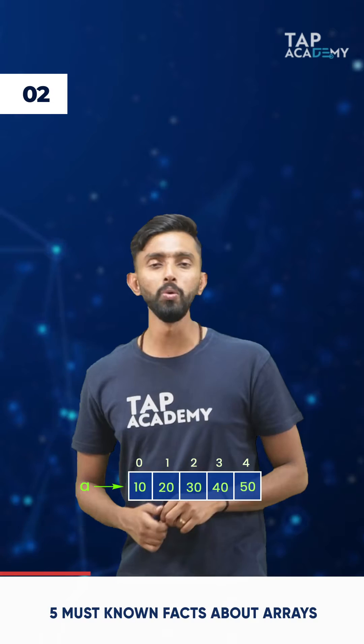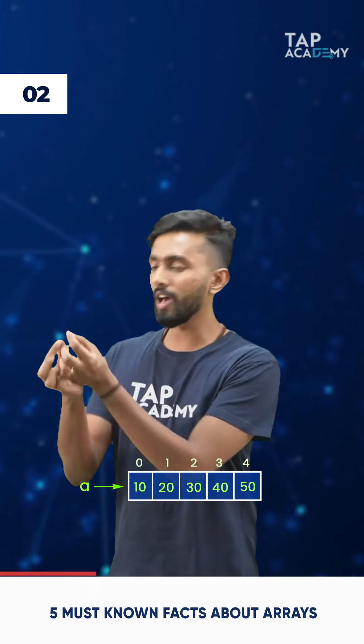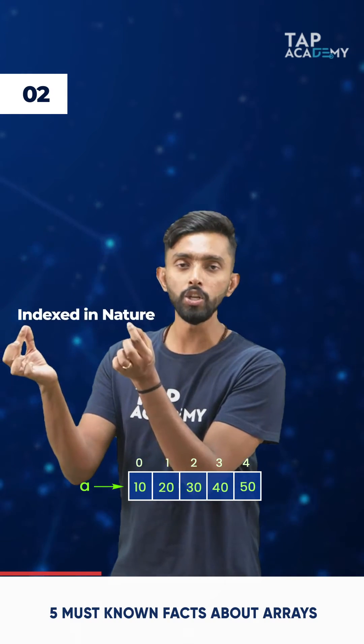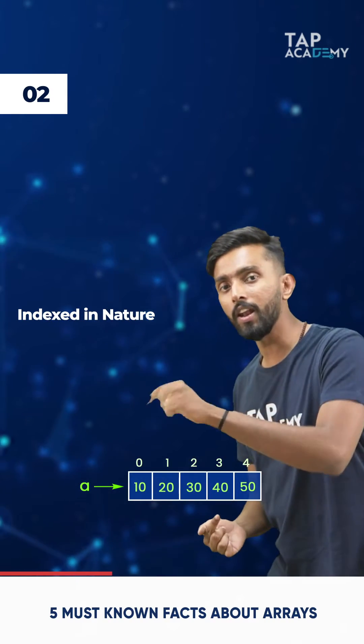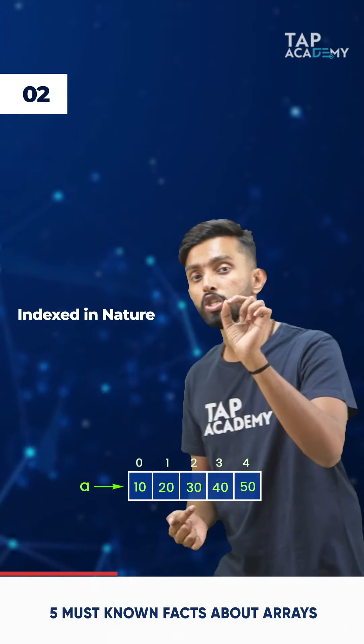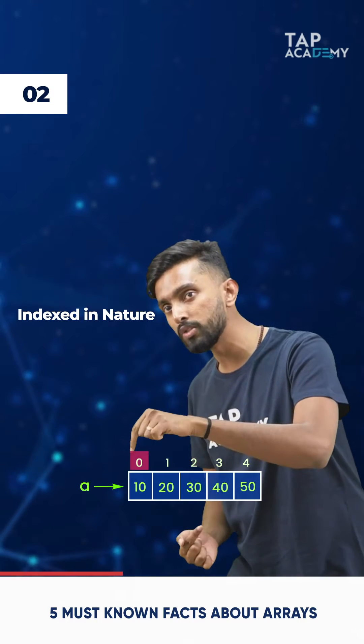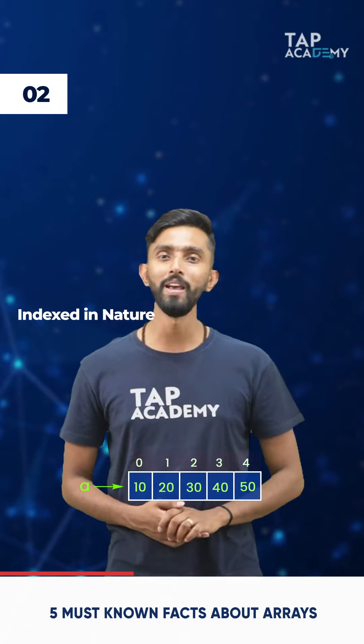Fact number two is that arrays are indexed in nature. What does this mean? Every cell in an array is given a positional value which begins from zero, so on and so forth.